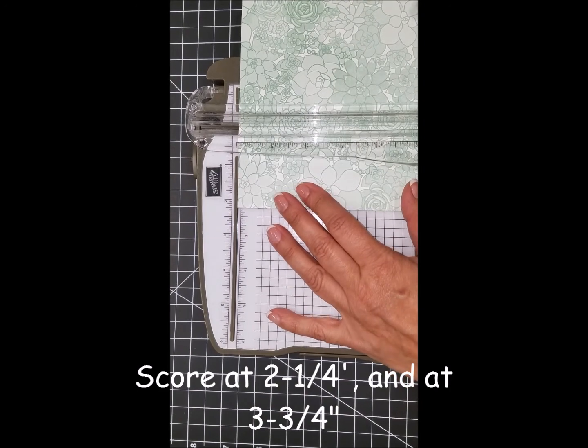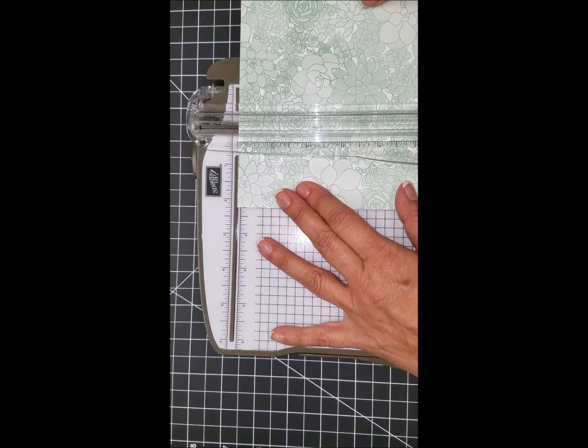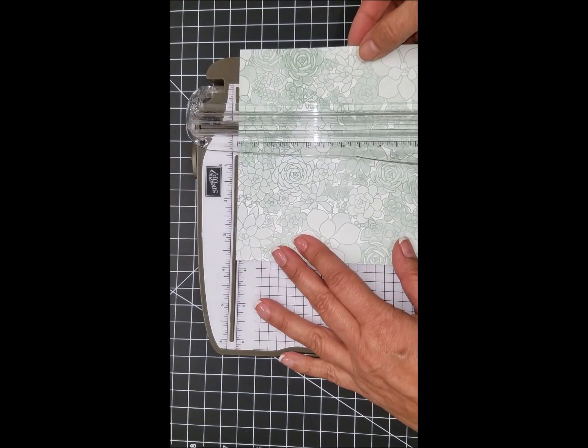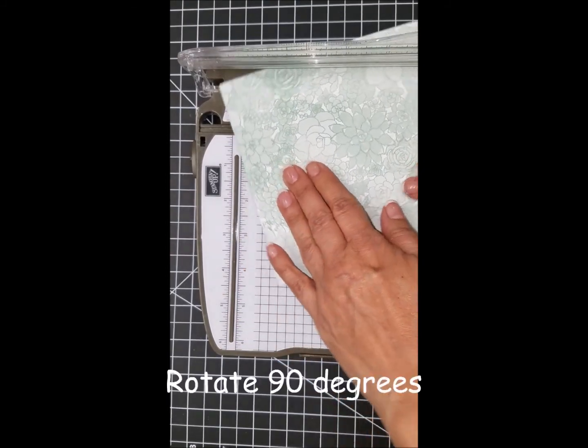We're going to scoot the paper down and then we're going to score again at three and three quarter inches. First let me apologize, I'm getting over a cold so I know I sound really nasally. I hope you can put up with me for the next few minutes.